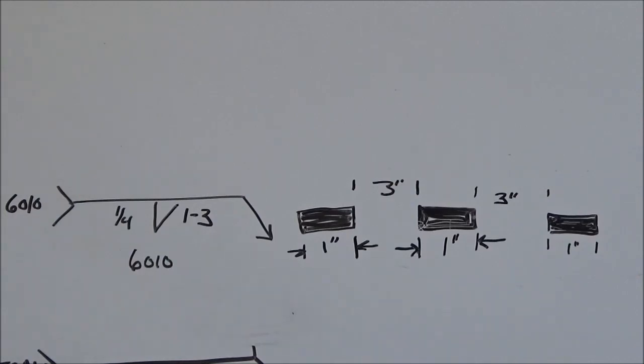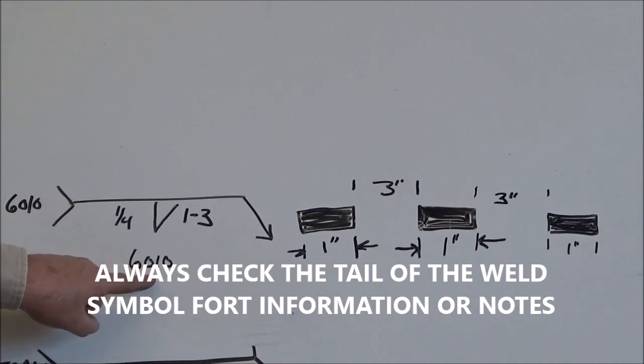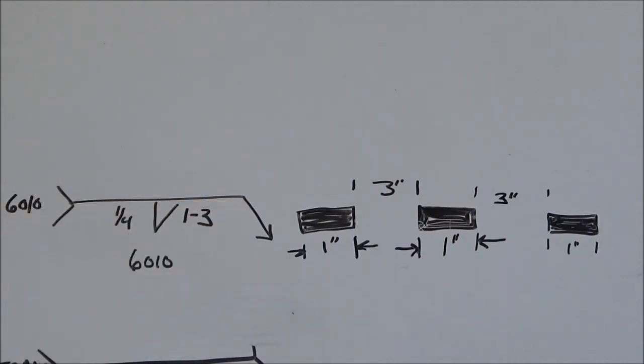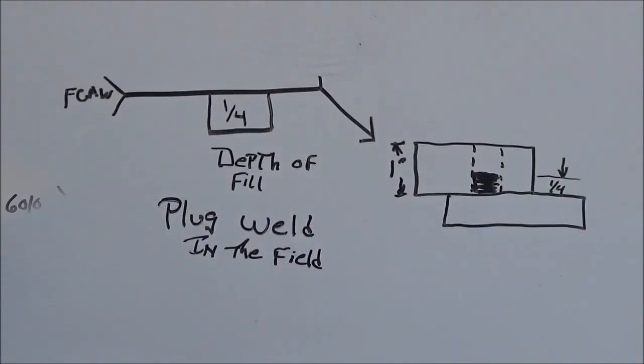Notice also that this tail has got the number 6010 in it, which tells me that this weld has to be made with the 6010 electrode. Okay, let's wrap up this series with the last welding symbol of the day and that's going to be a plug weld.